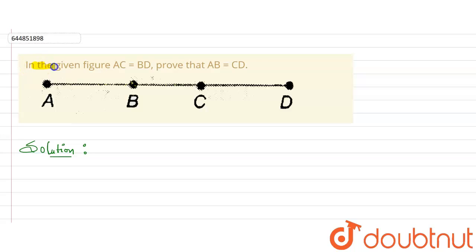Hello everyone, in this question it is given that in the given figure AC is equal to BD, then we need to prove that AB is equal to CD. So the condition given is that this AC segment will be equal to BD, and this is the figure here. What we need to prove is that AB is equal to CD.